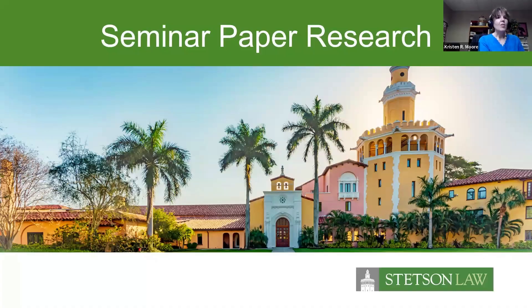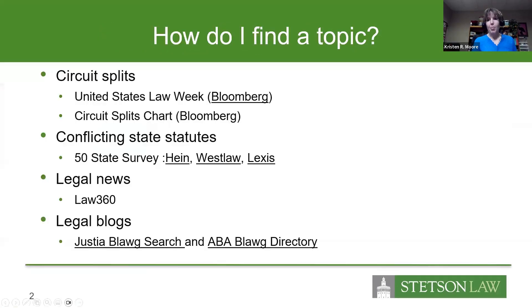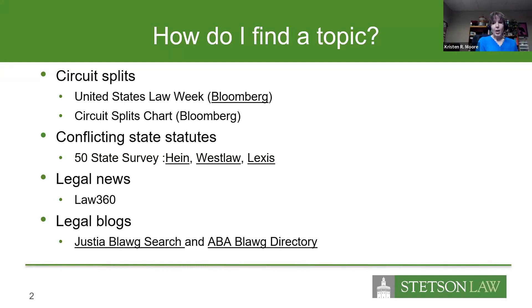Alrighty, let's dive right in. The first thing we want to talk to you about is how do you find a topic? There are a few things you can look at. You can look at circuit splits, and those are available in the United States Law Week, which you can find on Bloomberg. There are also circuit split charts available in Bloomberg. You may want to look at conflicting state statutes, and so you can do that by using 50 state surveys, and you can find 50 state surveys in HeinOnline, Westlaw, and Lexis. There's also legal news and legal blogs.